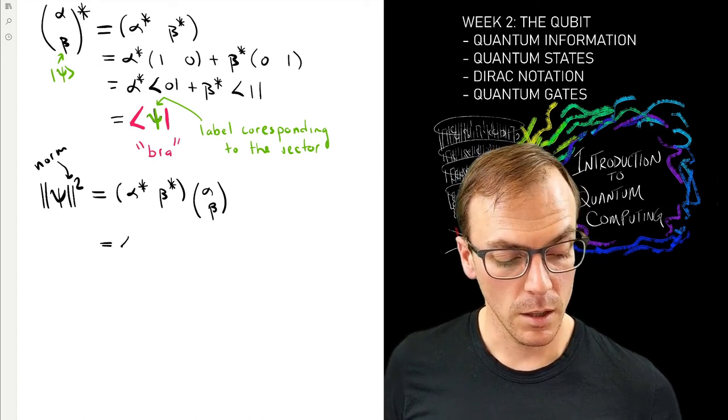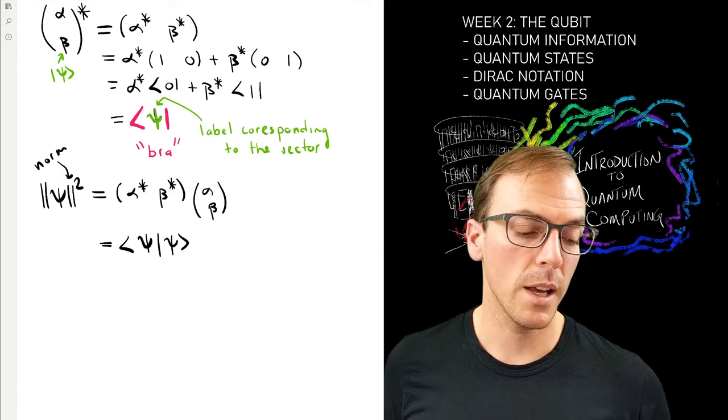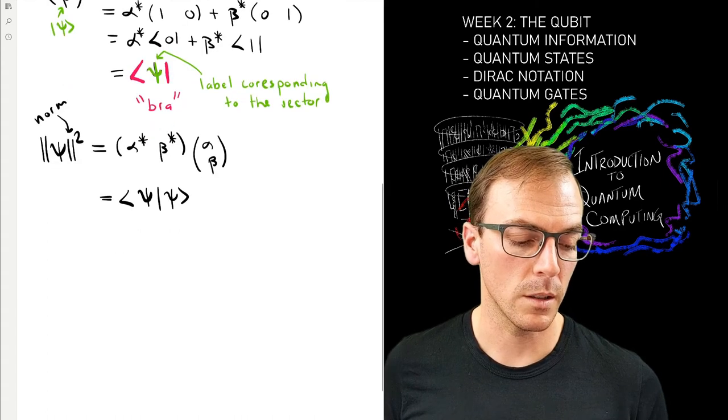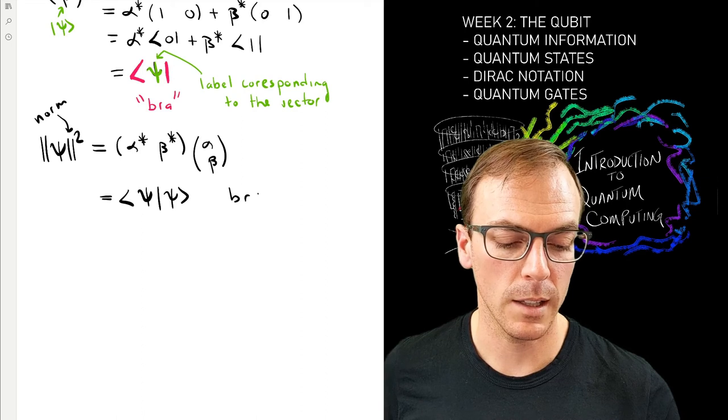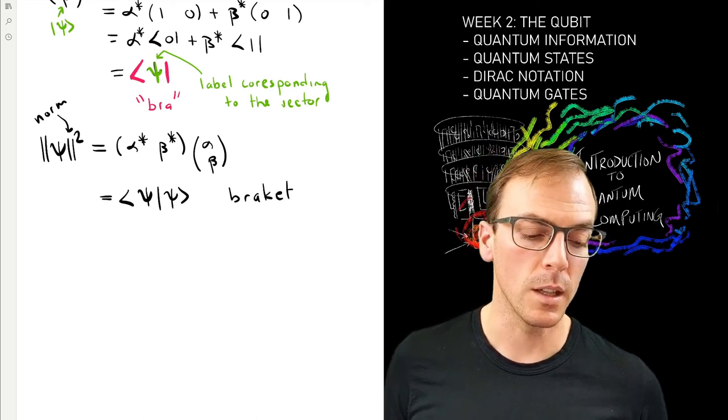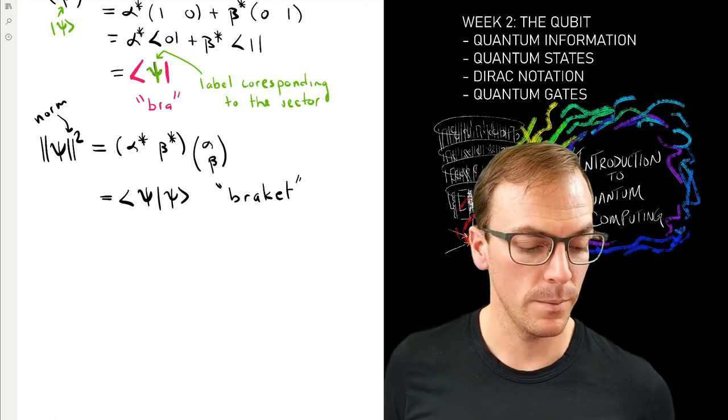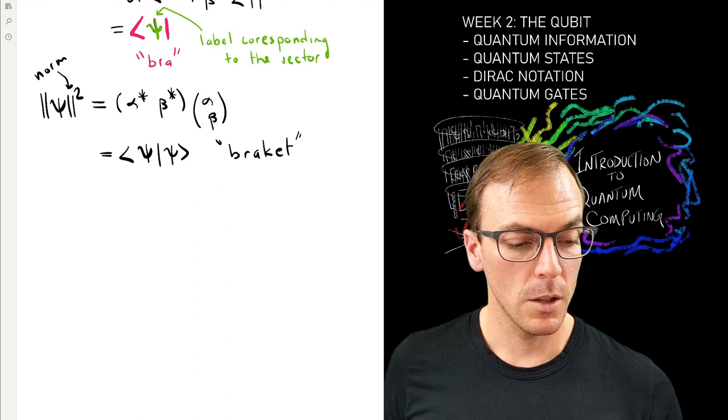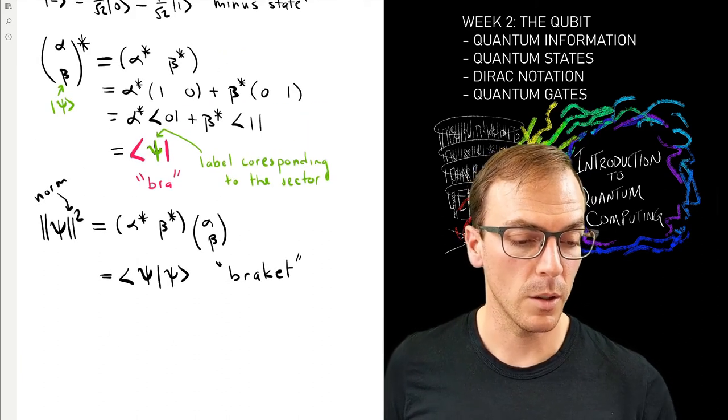In Dirac notation, I replace those two objects with their corresponding bras and kets. When I put a bra and a ket together, I get a bracket, so that's where the bracket notation terminology comes from. So I can take this bracket.